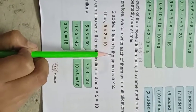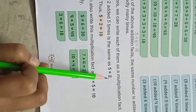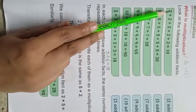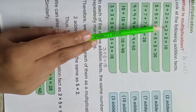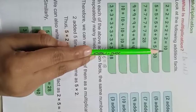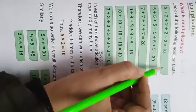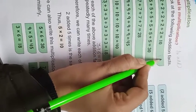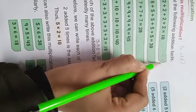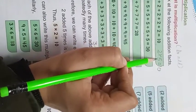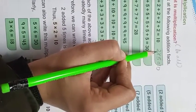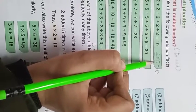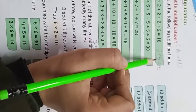Two ko five times add kiya gaya. Is the same as five into two. Yaahan par hamne two ko five times add kiya hai - one, two, three, four, five. Five times add kiya, hamein mil gaya ten. Ab iska opposite kar dete hain: two, kitne times add kiya gaya? Five times, that equals ten.